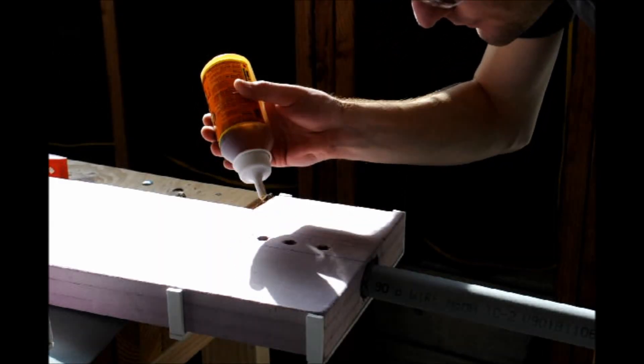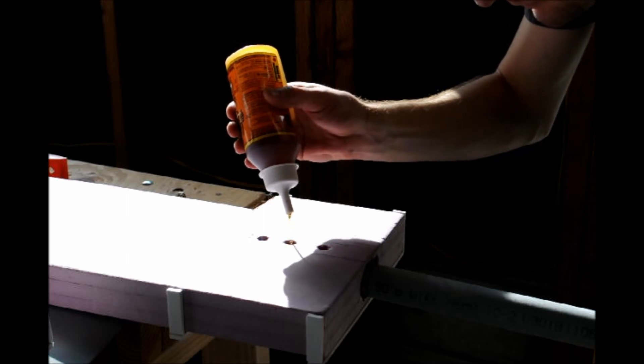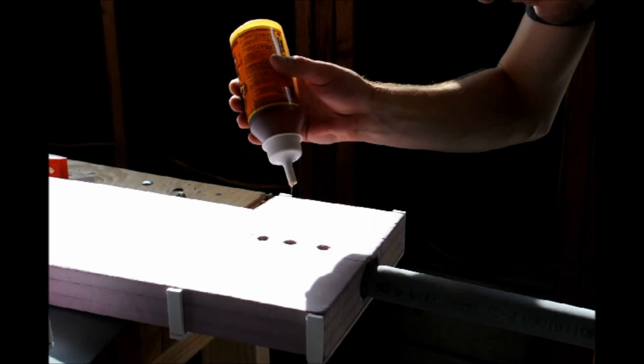Pour a good amount of glue into the handle hole and insert the pipe. Pour some more glue into the bolt holes and insert the bolts through the foam and pipe until they're flush with the surface.